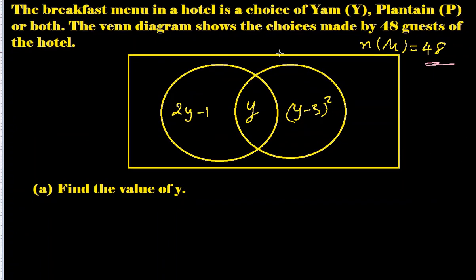The breakfast menu in a hotel is a choice of Yam, Plantain, or both. The Venn diagram shows the choices made by 48 guests of the hotel. Part a: Find the value of y.